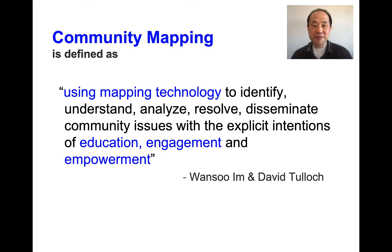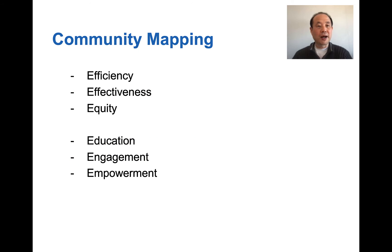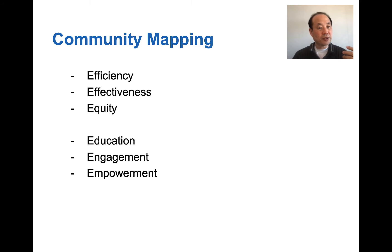Community mapping is defined as using mapping technology to identify, understand, analyze, resolve, and disseminate community issues with the explicit intention of education, engagement, and empowerment. Mainly, you can achieve efficiency, effectiveness, and equity. From the process, you can engage and empower community members while educating them too.